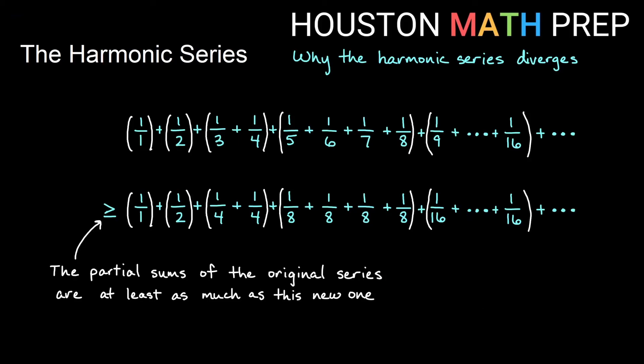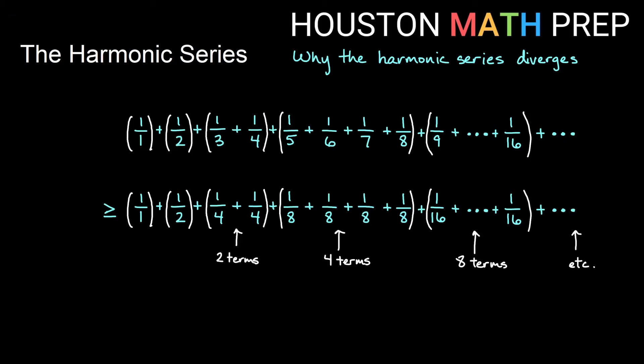If we start to look at this bottom series to try and analyze what's going on, so if I look at each of these, we'll notice obviously we have two terms and then four terms and then this would be eight terms from 1 ninth to 1 16th all turned into 1 16th. So you can see the number of terms after the first two, the number of terms in each group is doubling each time. Well 2 1 fourths and 4 1 eighths and 8 1 16ths, those are all going to add to a very particular number, right?